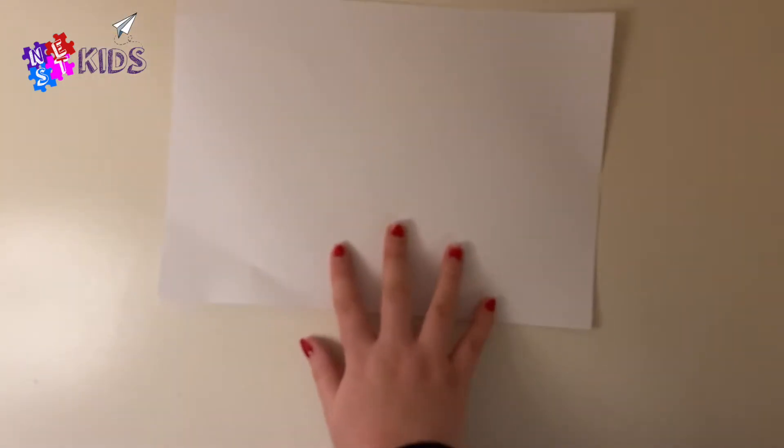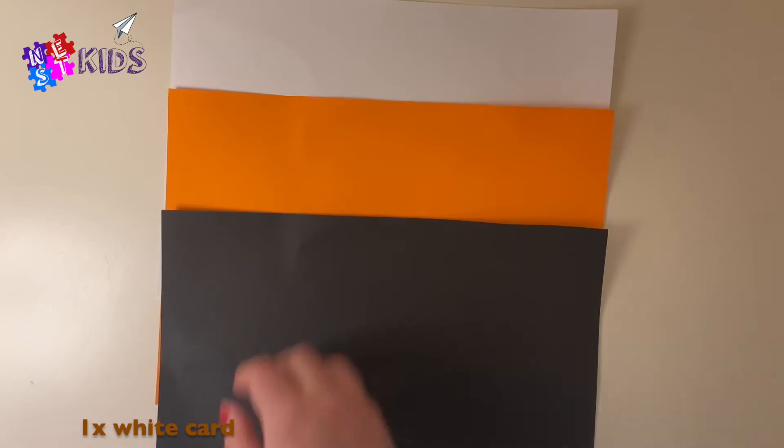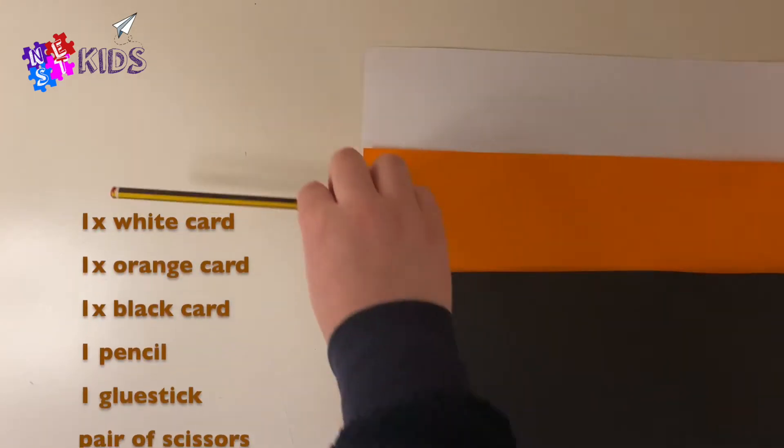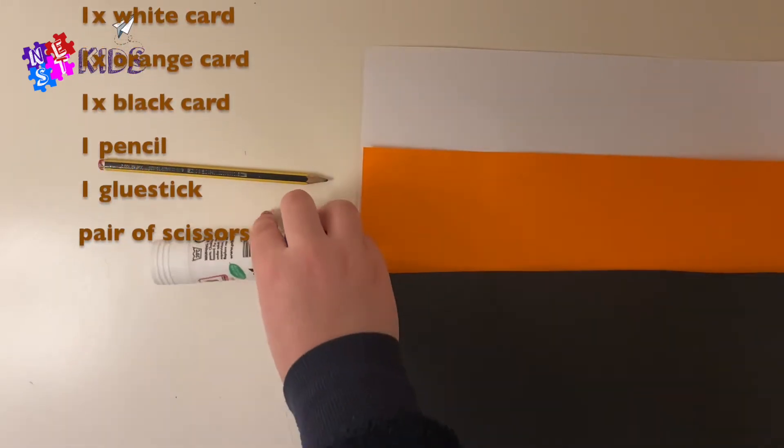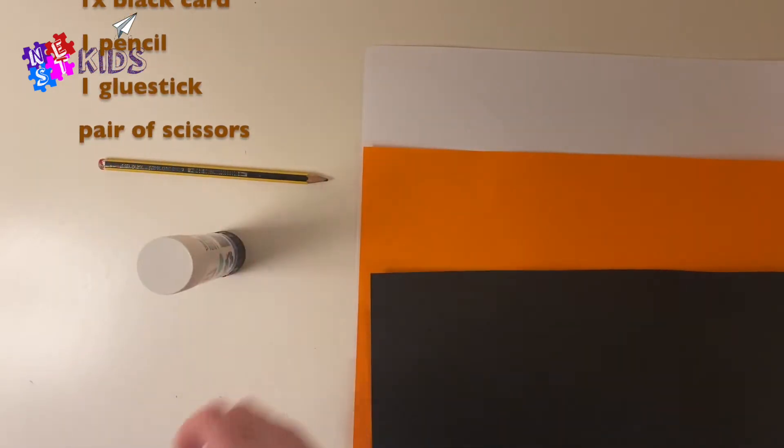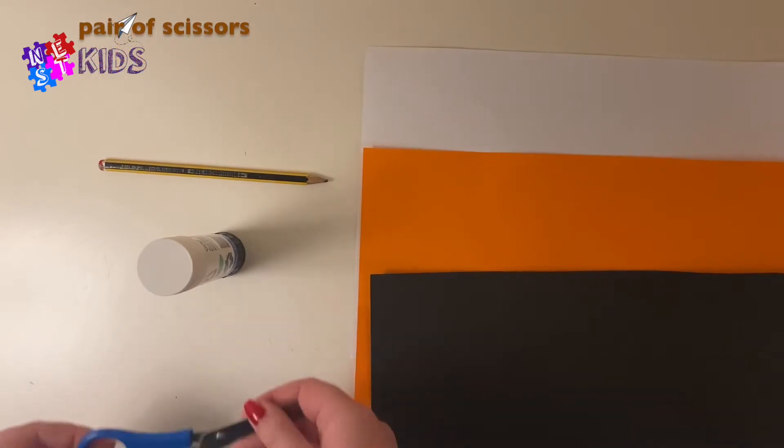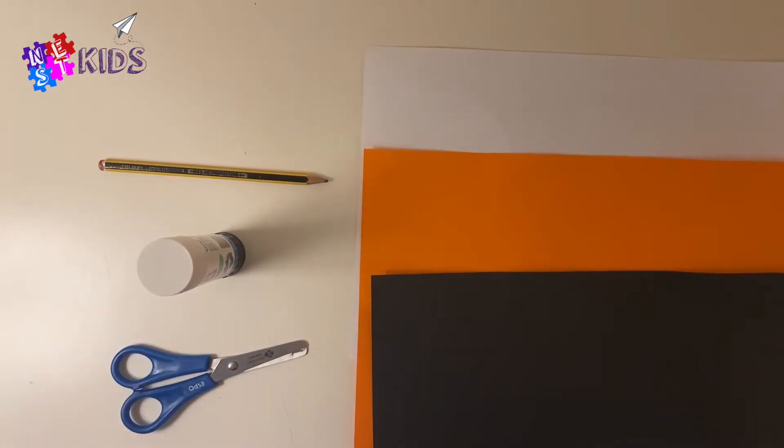So the things you will need to make the penguin is three pieces of card: one white, one orange, and one black like I have here. A pencil, a glue stick or something to stick them together with, and you need some scissors. Remember scissors are sharp, so have an adult to help.